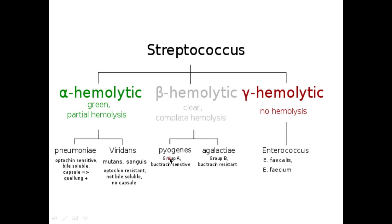To differentiate between the beta hemolytic group A and group B streptococci, we use a bacitracin disc. Group A streptococci, which are strep pyogenes, are bacitracin sensitive, and group B streptococci, which are streptococcus agalactiae, are bacitracin resistant.